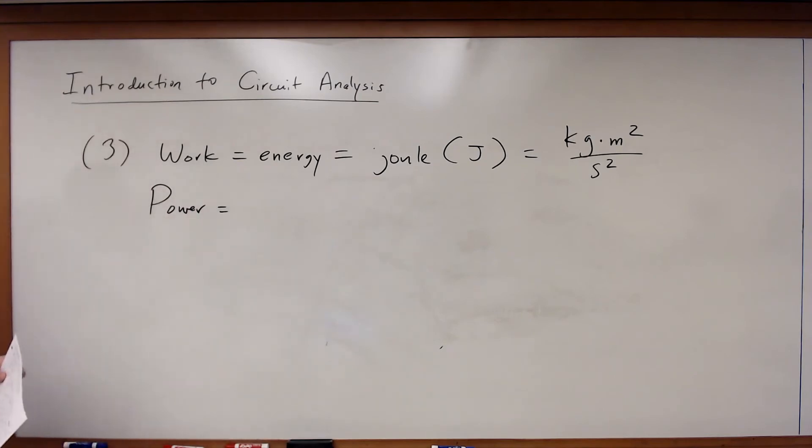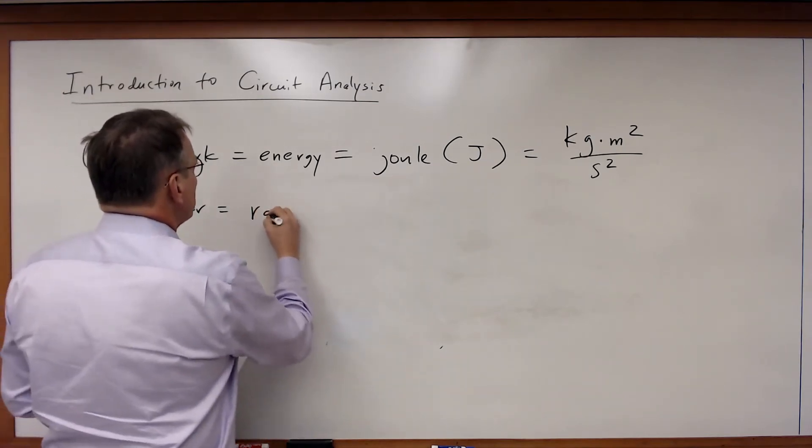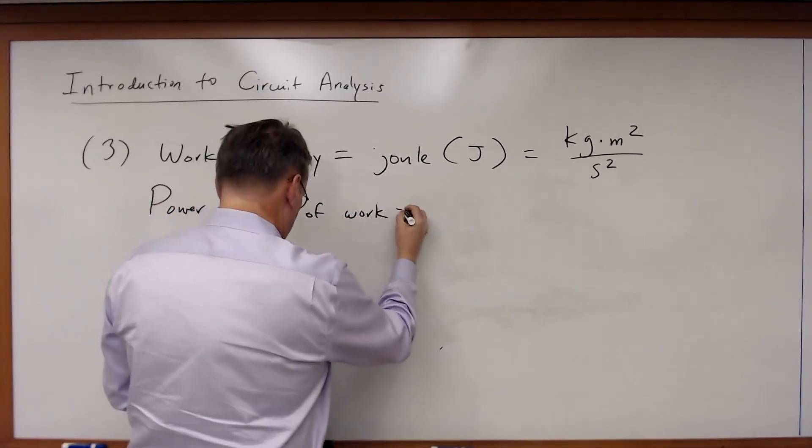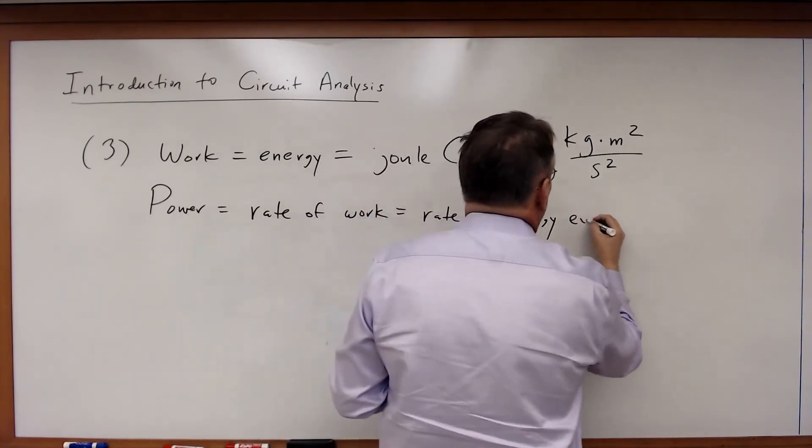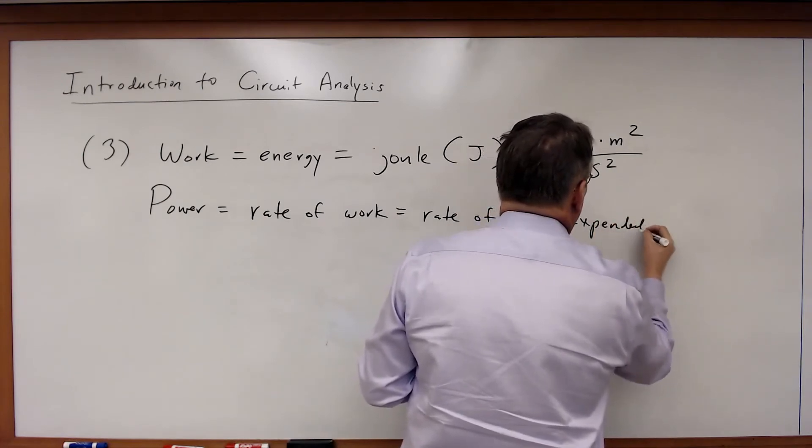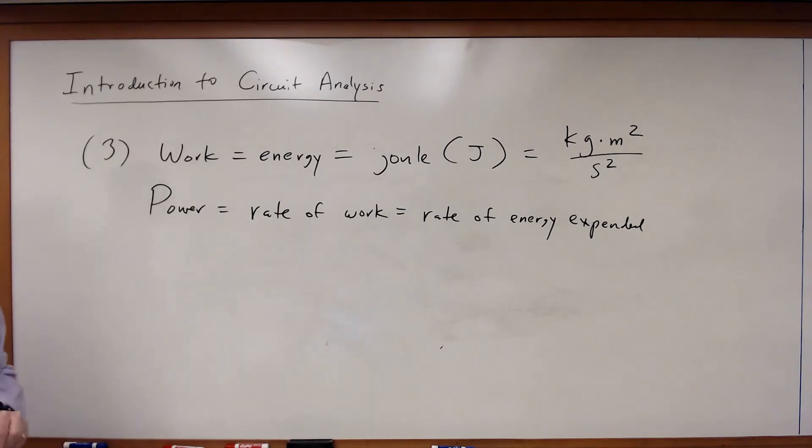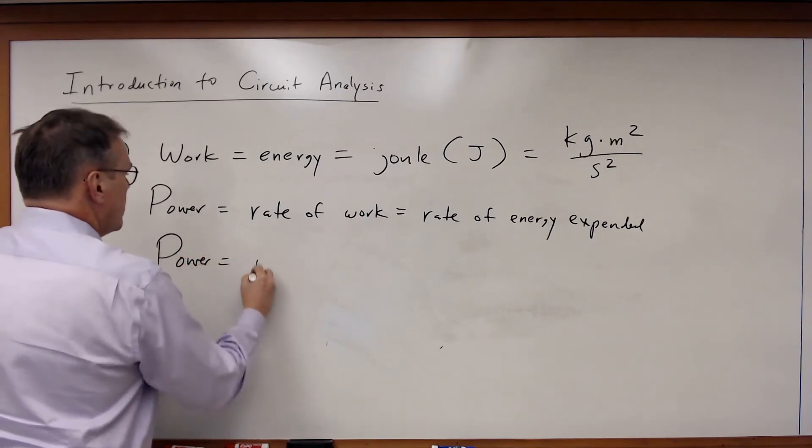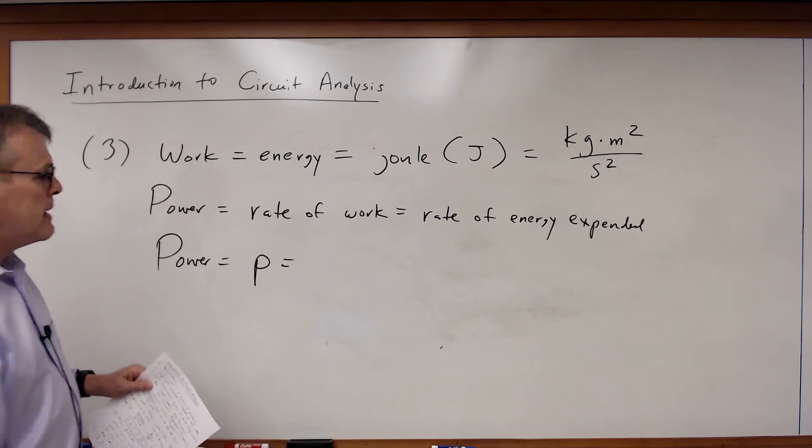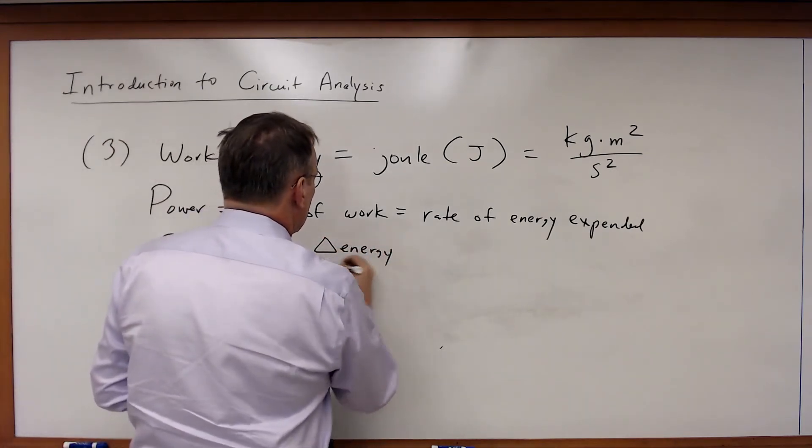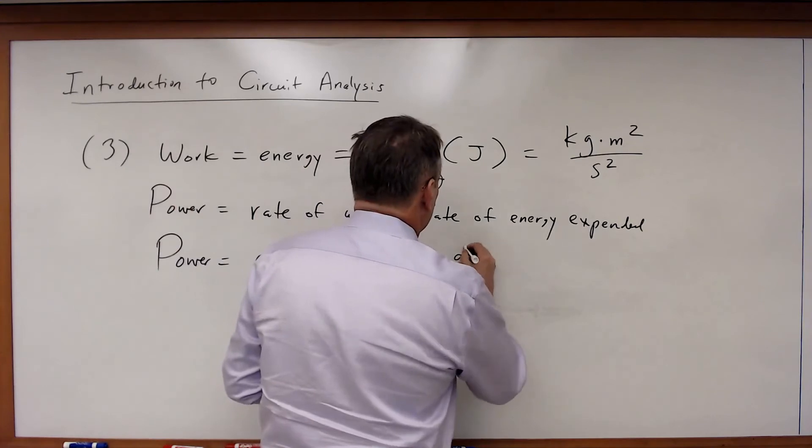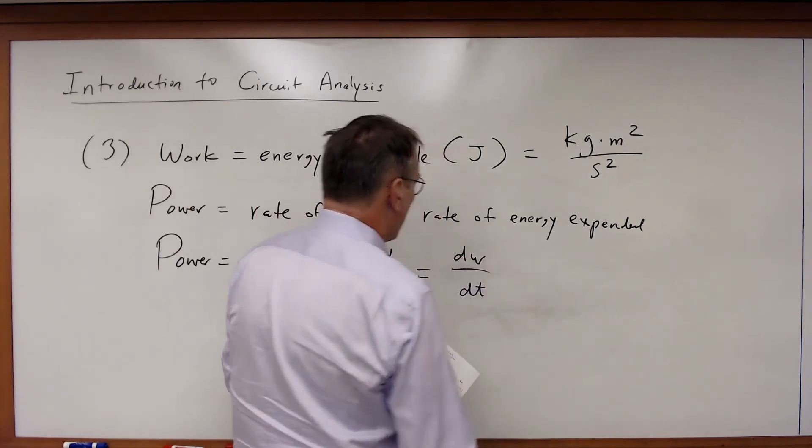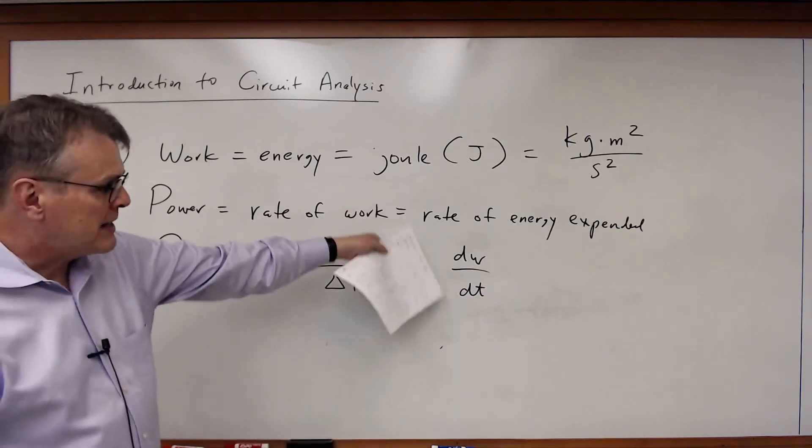Power is the rate of work or the rate of energy expenditure. Once again, you have undoubtedly seen these definitions before, or this definition of power. And in this class, or in this course, power, which we're going to define as P, is the rate of energy per unit time. Or, putting this in derivative form, it's the derivative of energy with respect to time, dw dt.